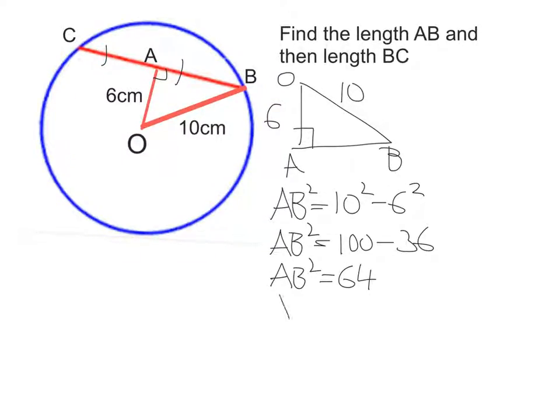So we know that AB then is going to be the square root of 64. So AB is 8, so 8 centimeters.